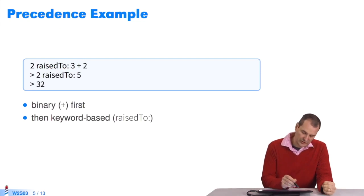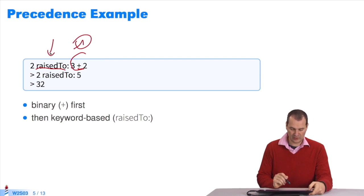This is another situation. I'm going to raise to the power using raisedTo. I have a binary message and a keyword. The binary message wins. First, I get 5. Then I execute raisedTo. It returns 32. It's right.